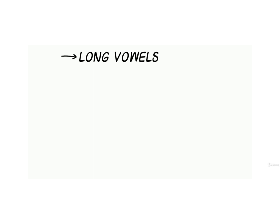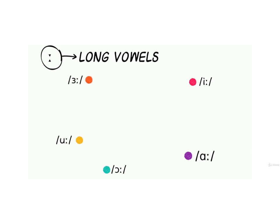Long vowels. There are five long vowels in American English: E, A, O, U, A.